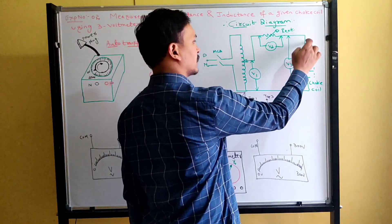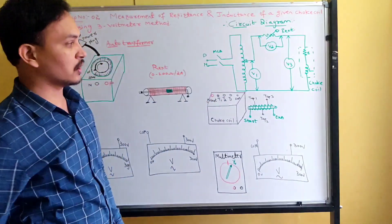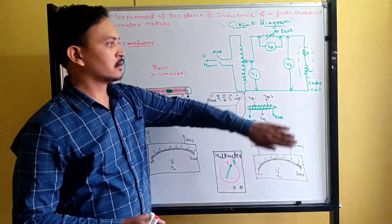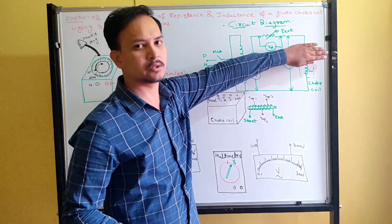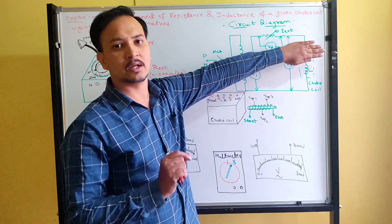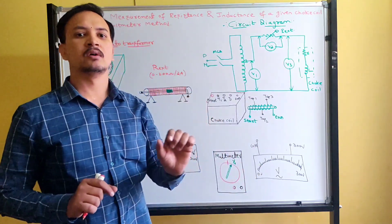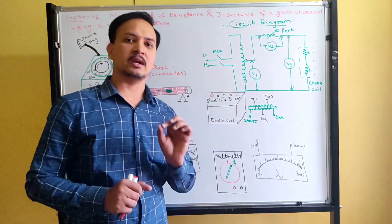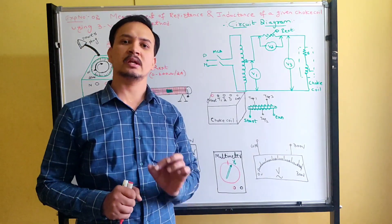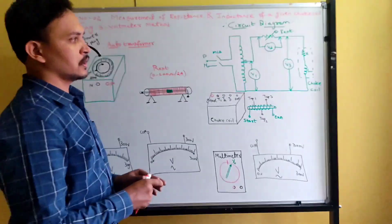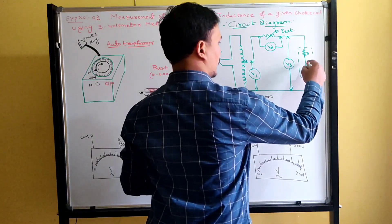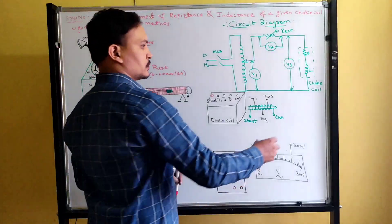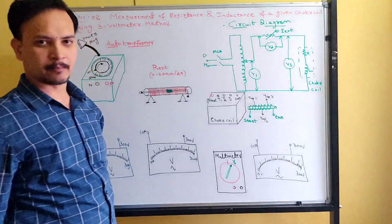The auto transformer's one end is connected to the external resistance — the rheostat — and the other end is connected to the starting of the choke coil. A choke coil is a practical inductor. An ideal inductor has only inductance with no resistance, but a practical inductor has both resistance and inductance internally connected in series. The other end of the choke coil returns back to the supply.